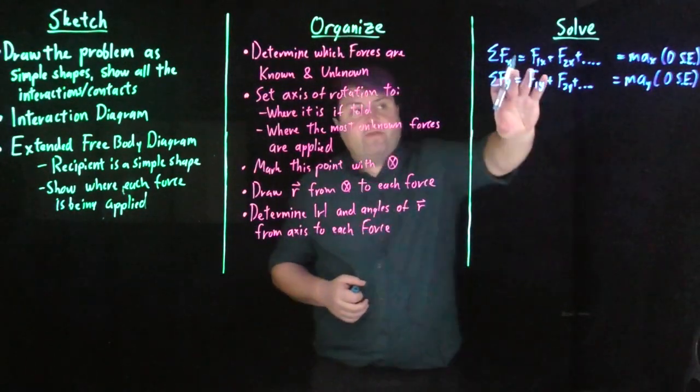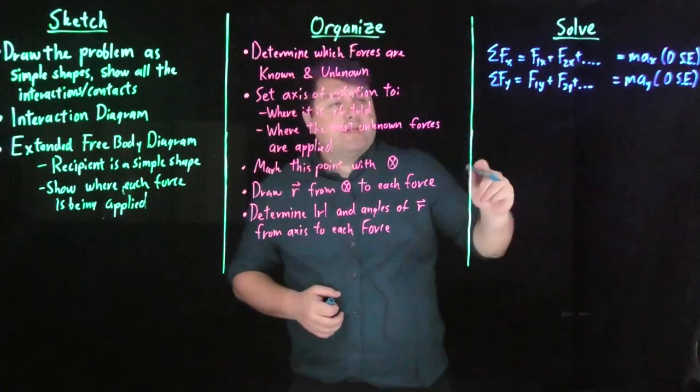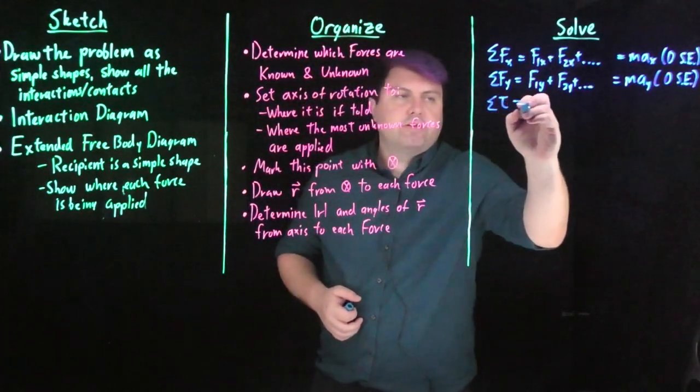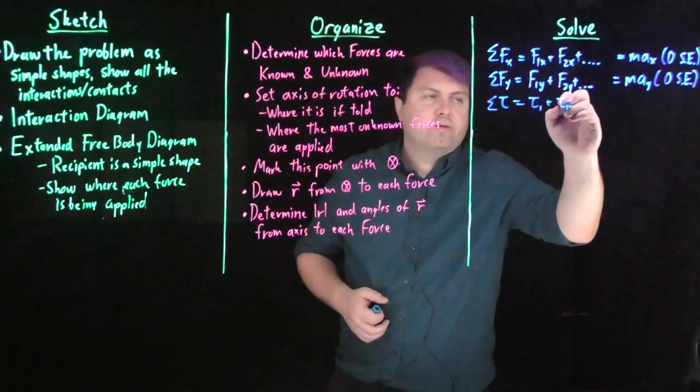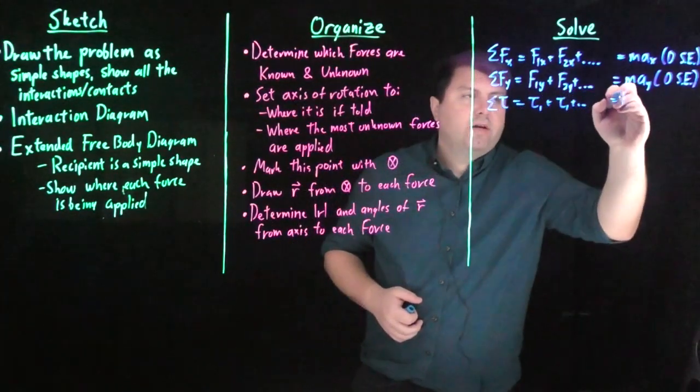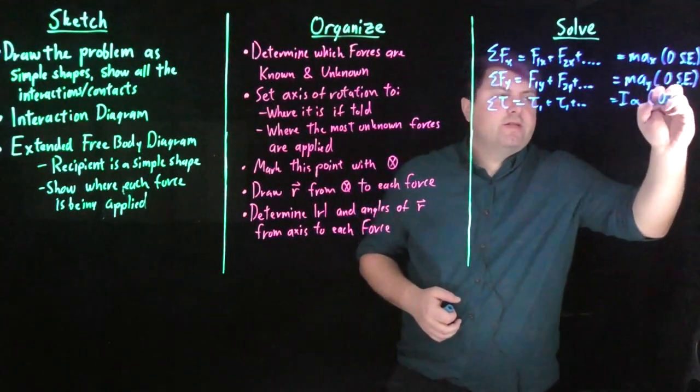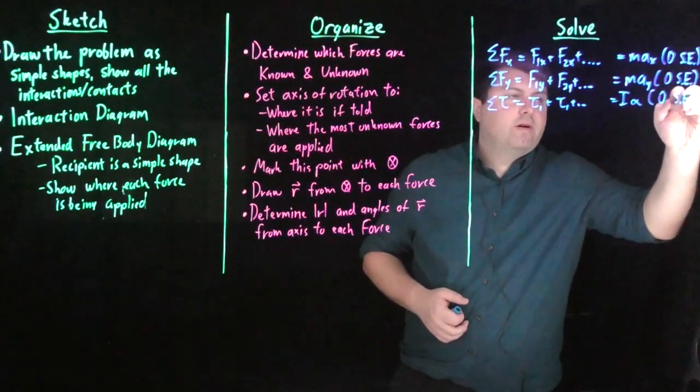And so, this is very familiar. We hopefully have a lot of experience with this. Our last thing, the new thing, is now the sum of our torques, so torque one plus torque two, and so on and so forth, is equal to the moment of inertia times alpha, and this is also zero for static equilibrium.